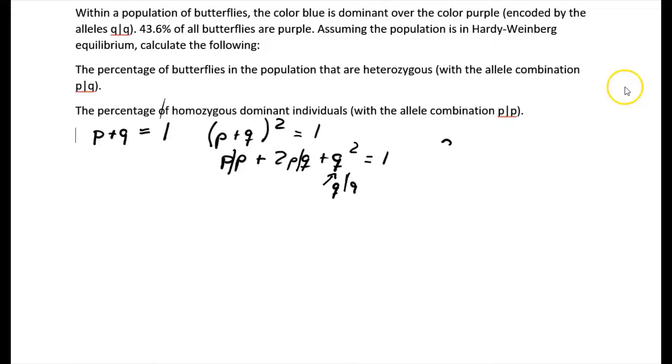We know that the combination QQ, that is what we had looked at. These are the purple butterflies. They make up 43.6% or 0.436. Now we can easily calculate the frequency of Q, because Q is just simply the square root of this 0.436. If we put that into a calculator, we get a frequency of 0.66. So in other words, the frequency for the allele Q for the recessive one is 66%.